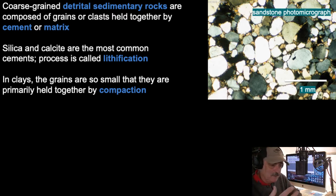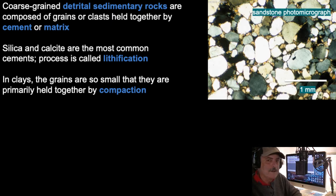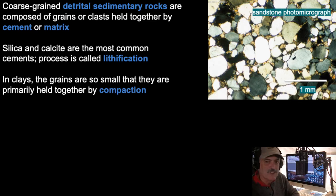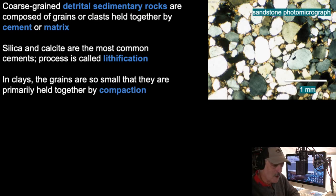A matrix could be clay coats, and you can get all sorts of things in the matrix depending on the depositional environment. That process by which we can cement or bind rocks together is called lithification. 'Lithos' means rock, and lithification is the rock-forming process.